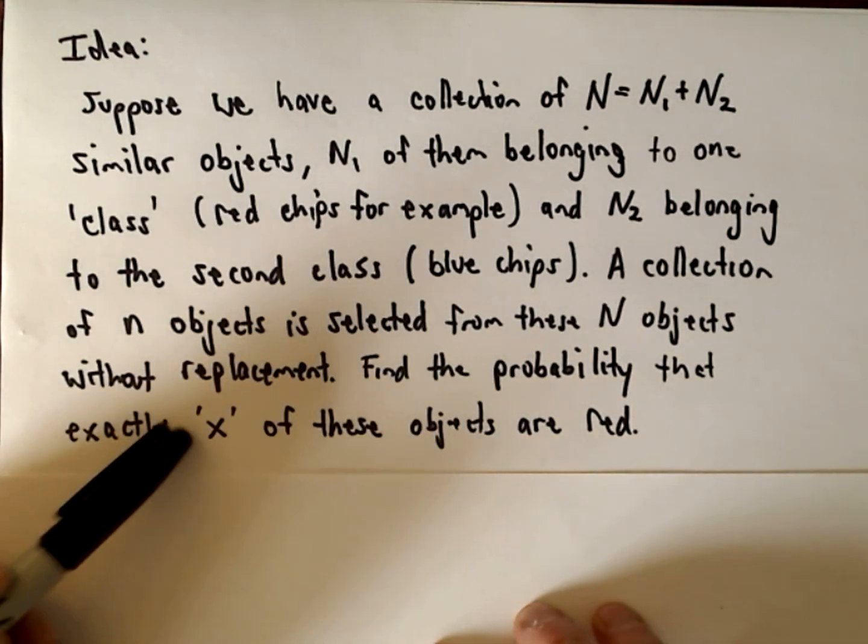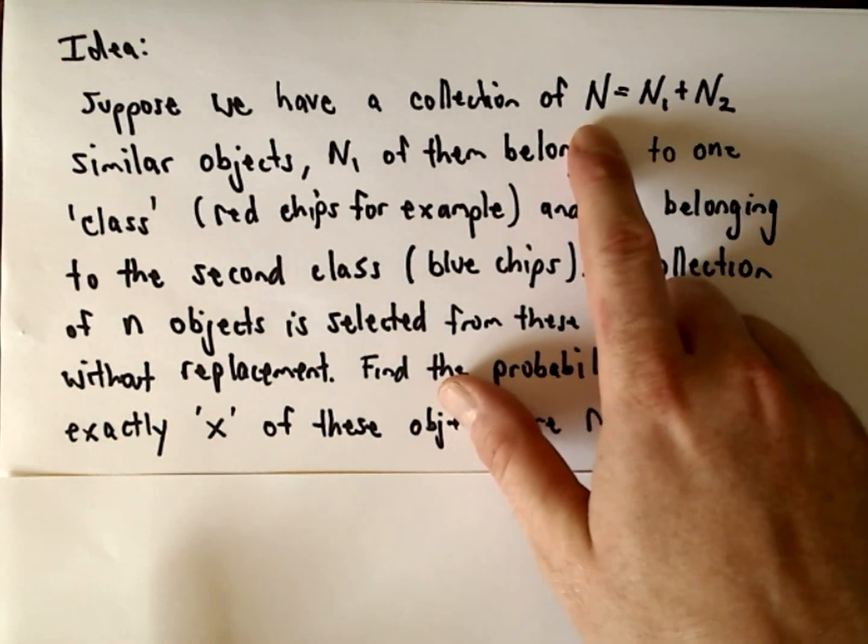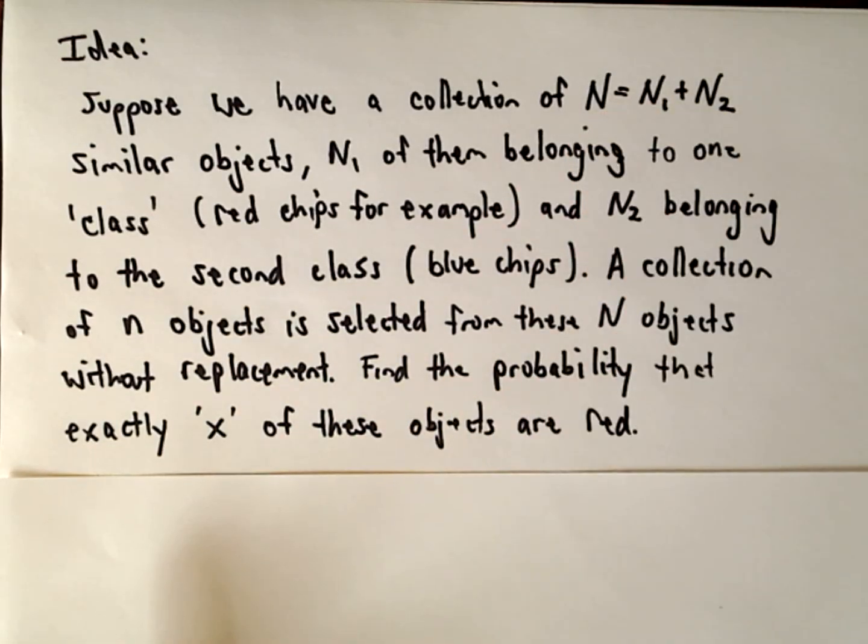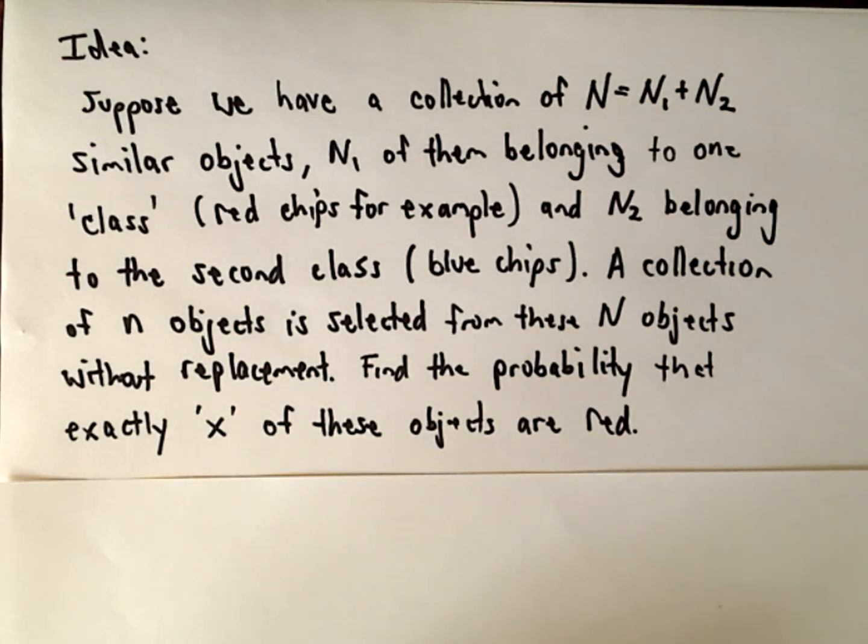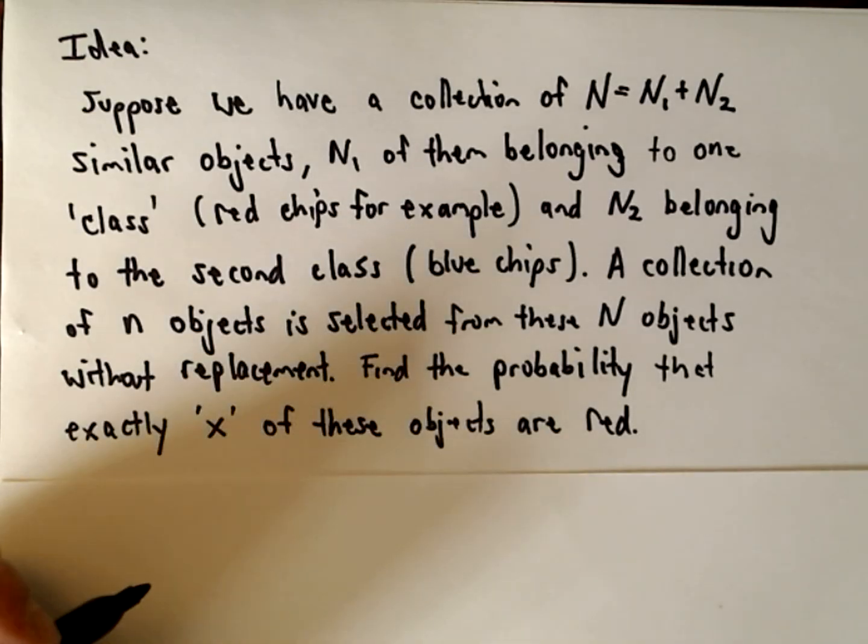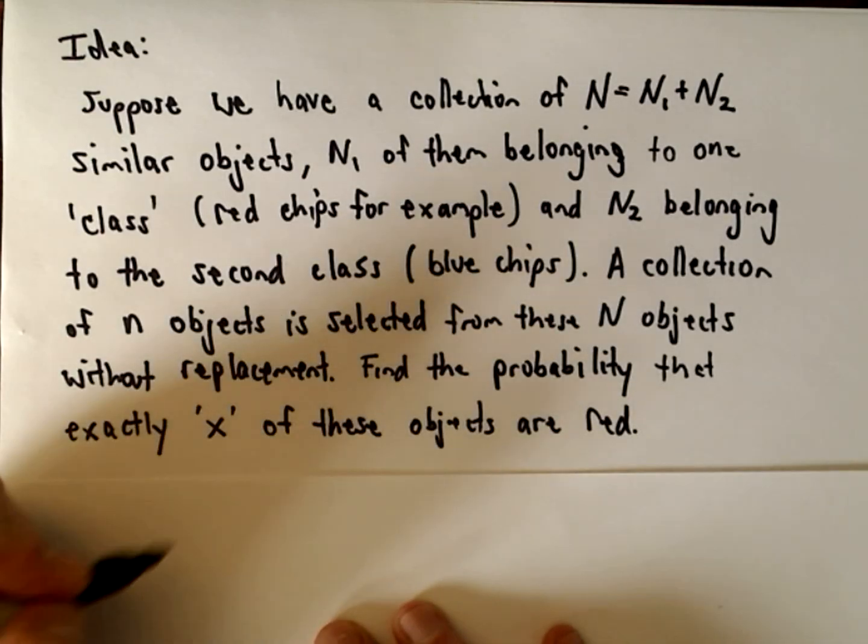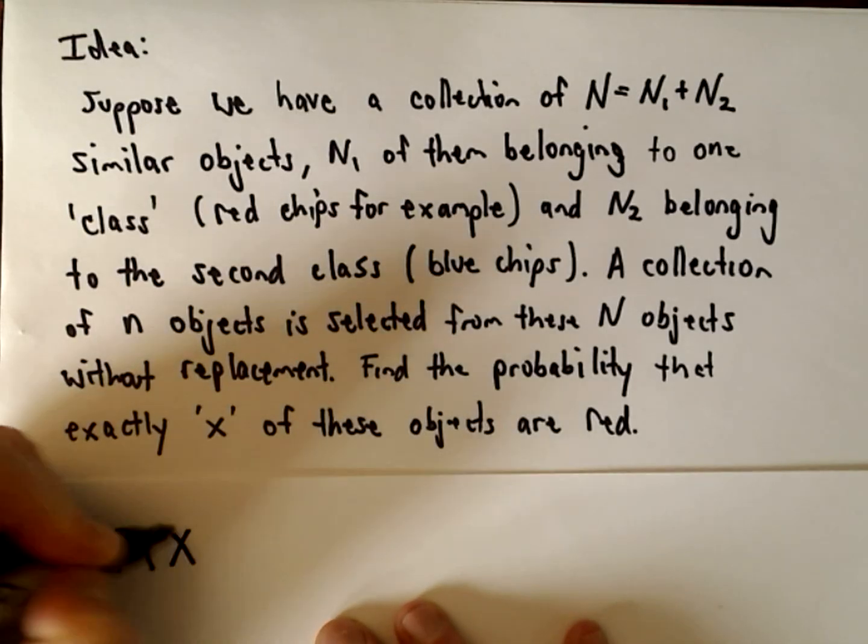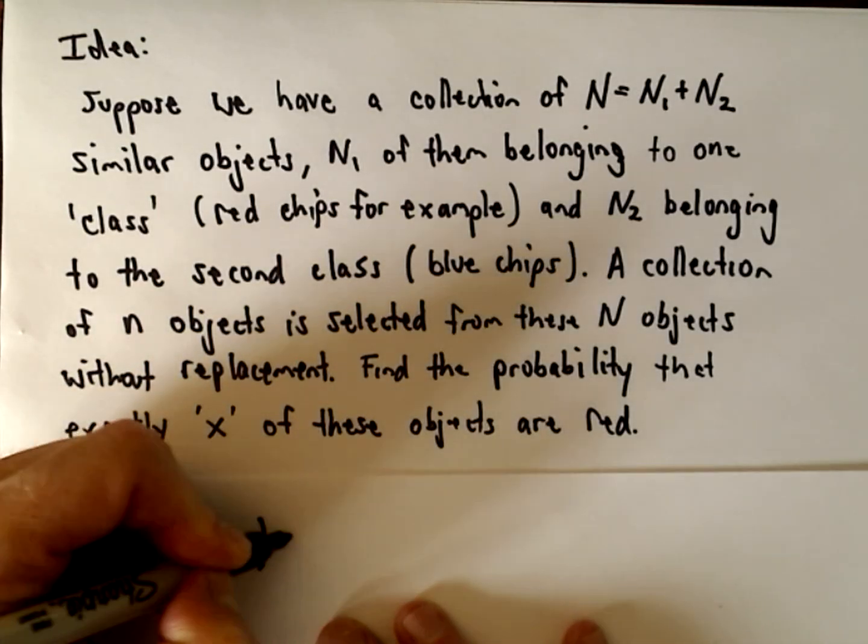And of course there's some restrictions on n and x, right? Little n has to be less than or equal to capital N. X is going to have to be smaller as well. We want to find the probability that x of these objects is red.